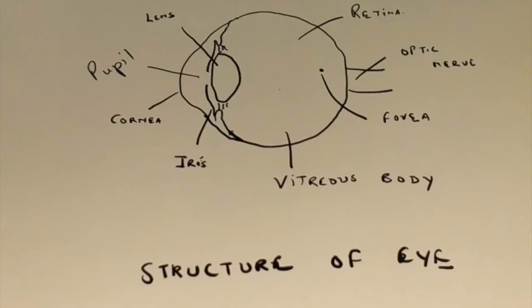We can also see the nerve coming out of the eye called the optic nerve, which carries optical signals to the brain.